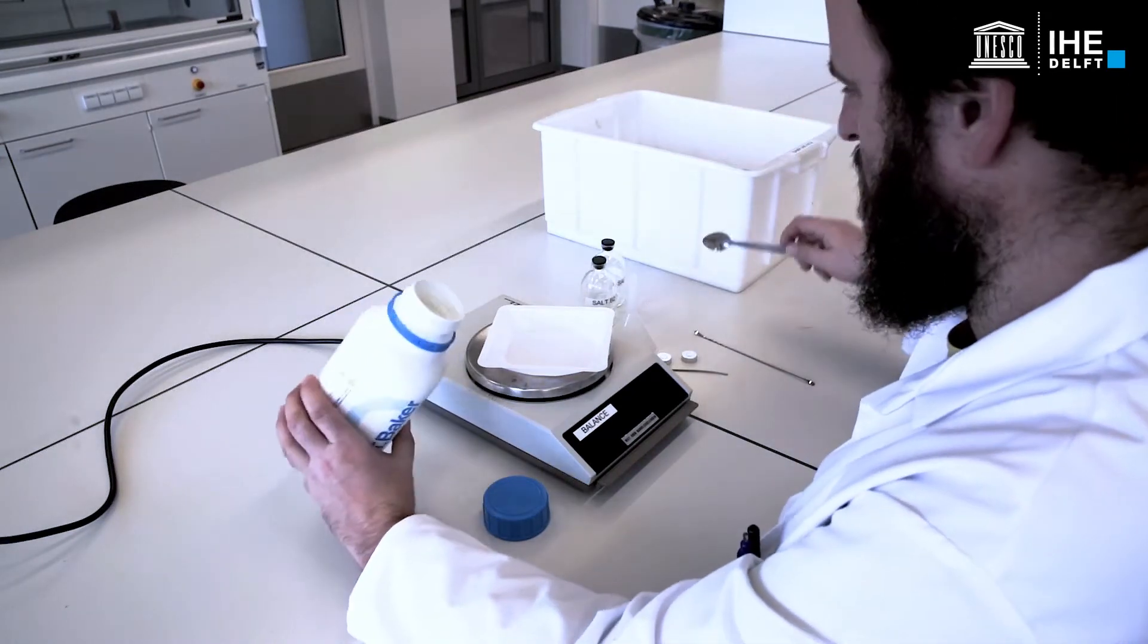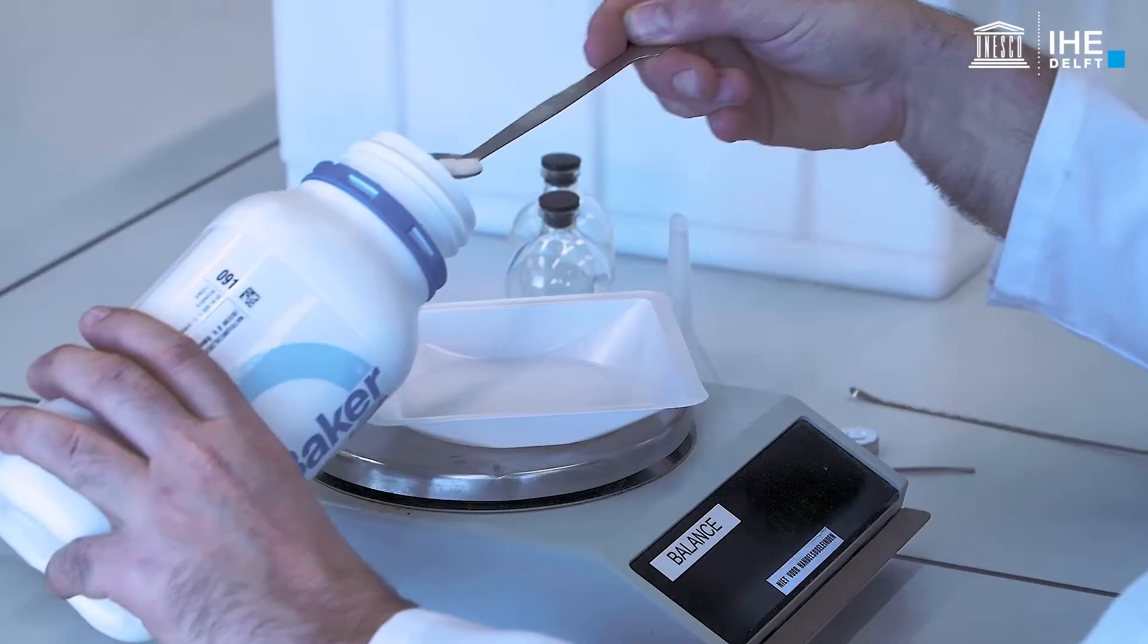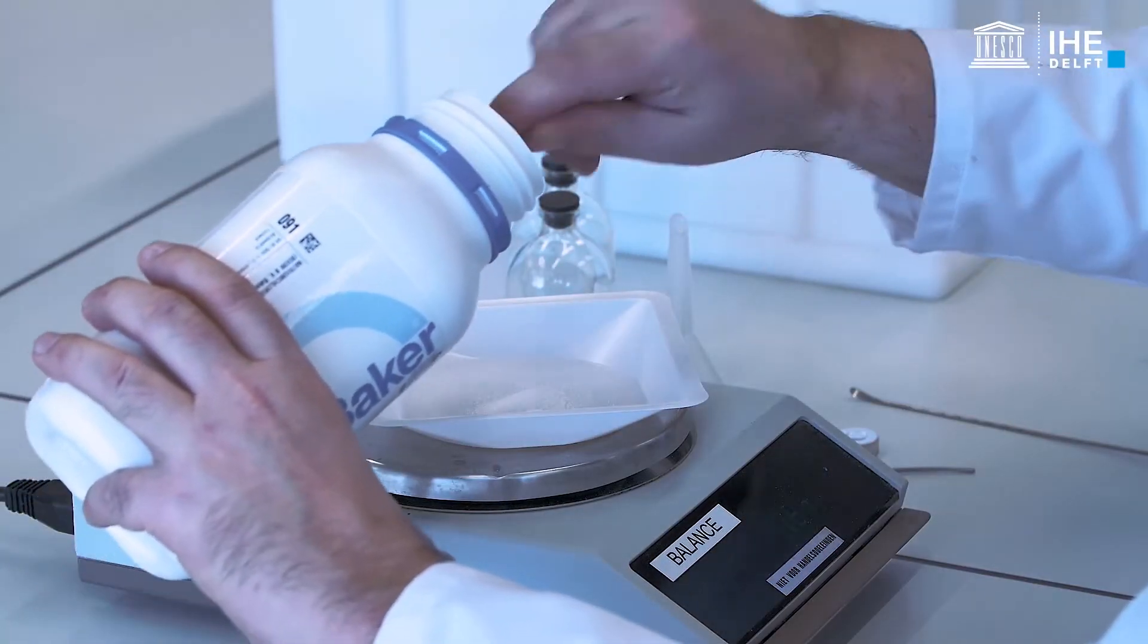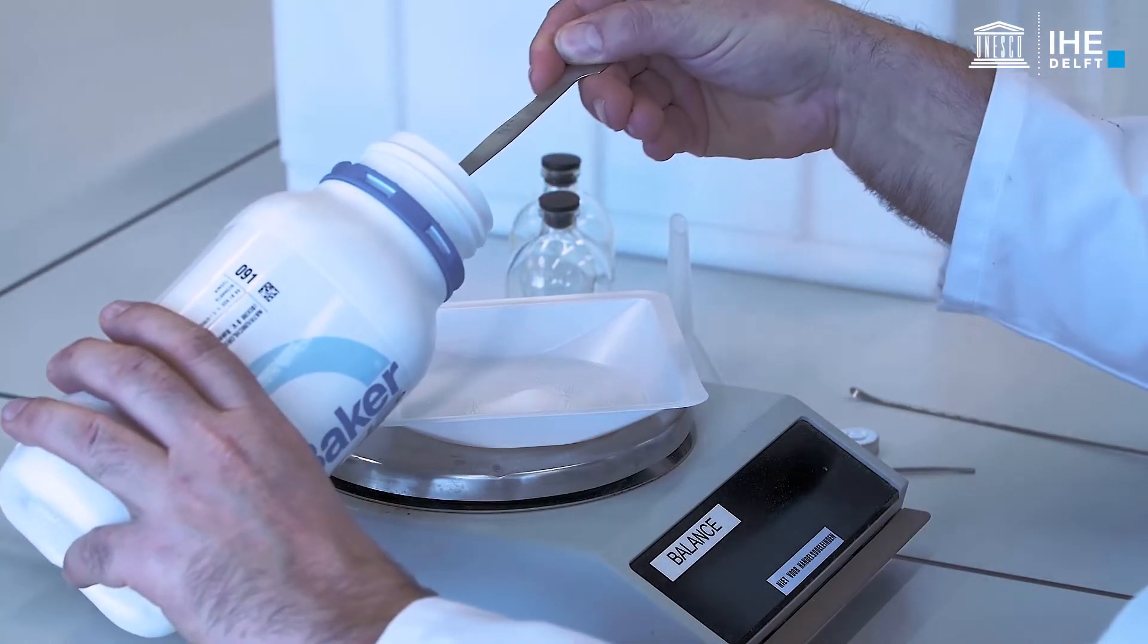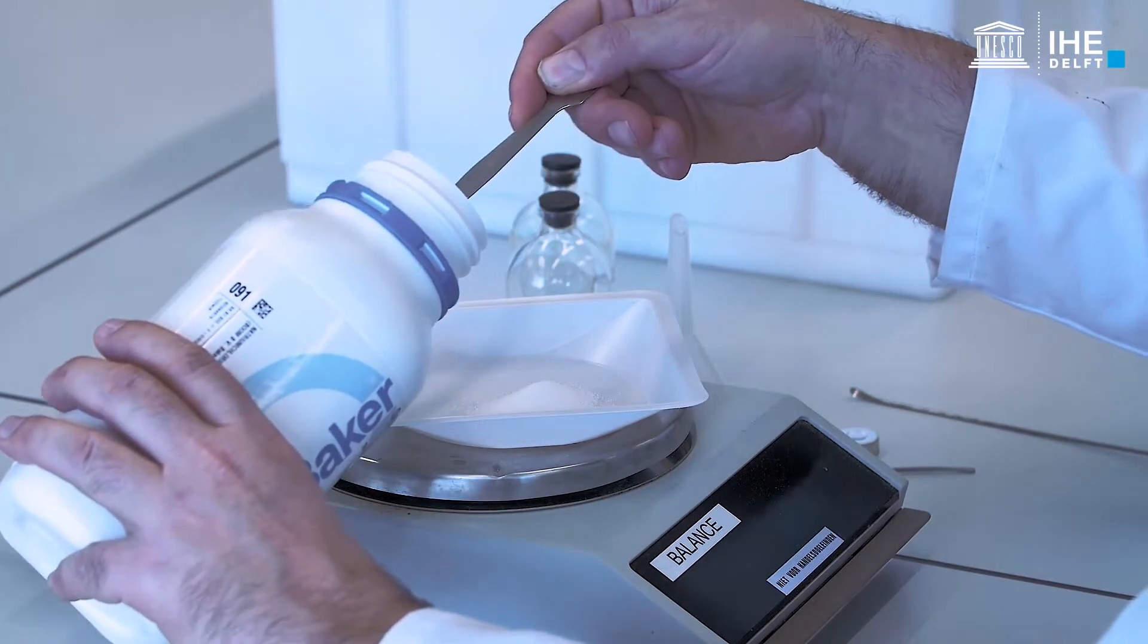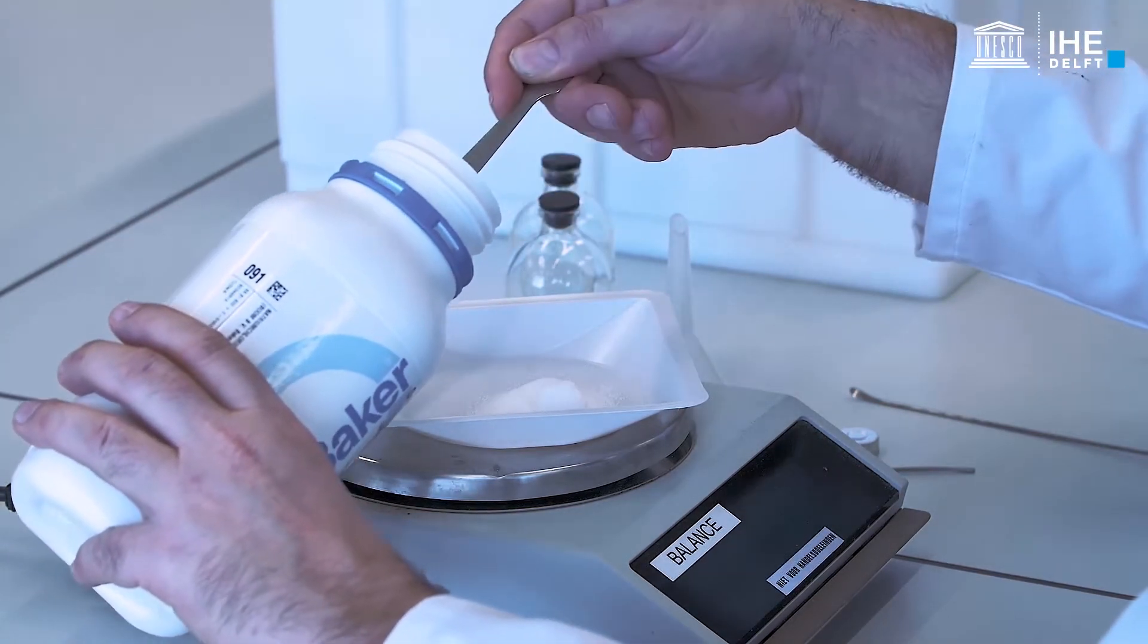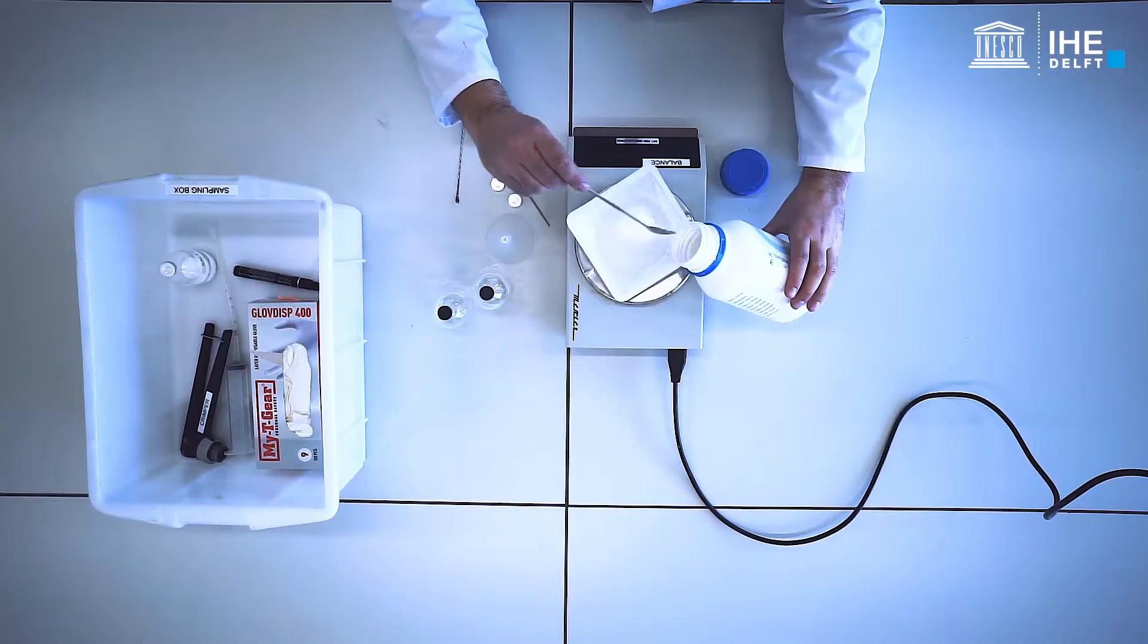The salting out method for the determination of dissolved gas concentrations is performed in 120 milliliter serum bottles. First, weigh and pour into the serum bottle 20 grams of sodium chloride.